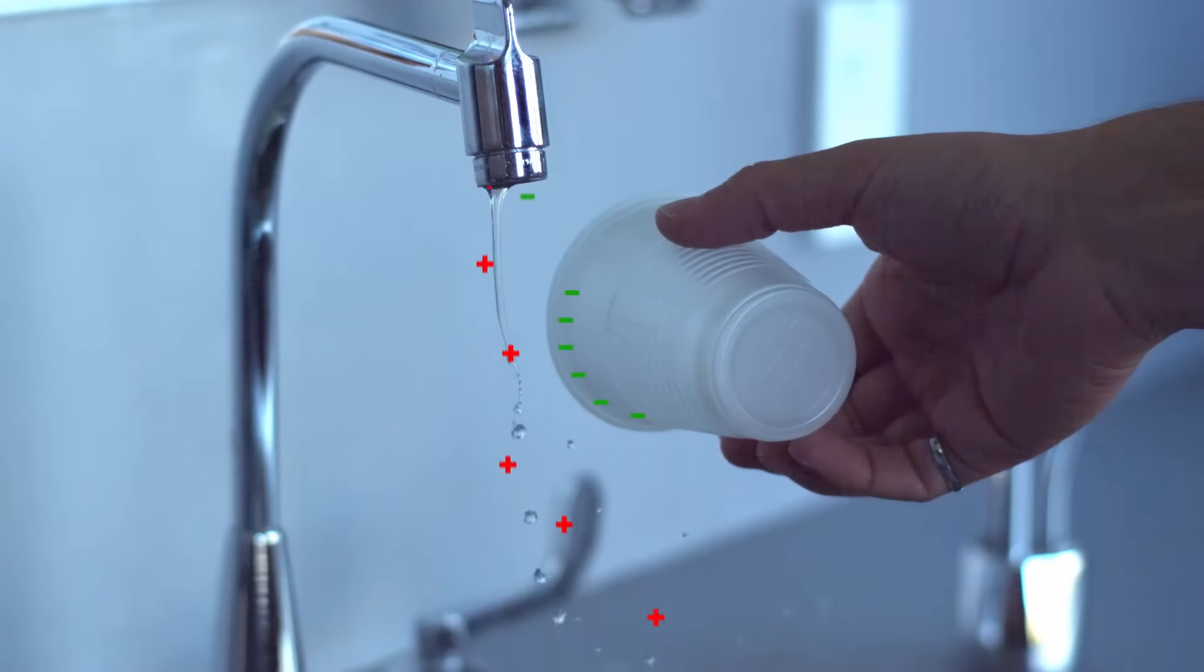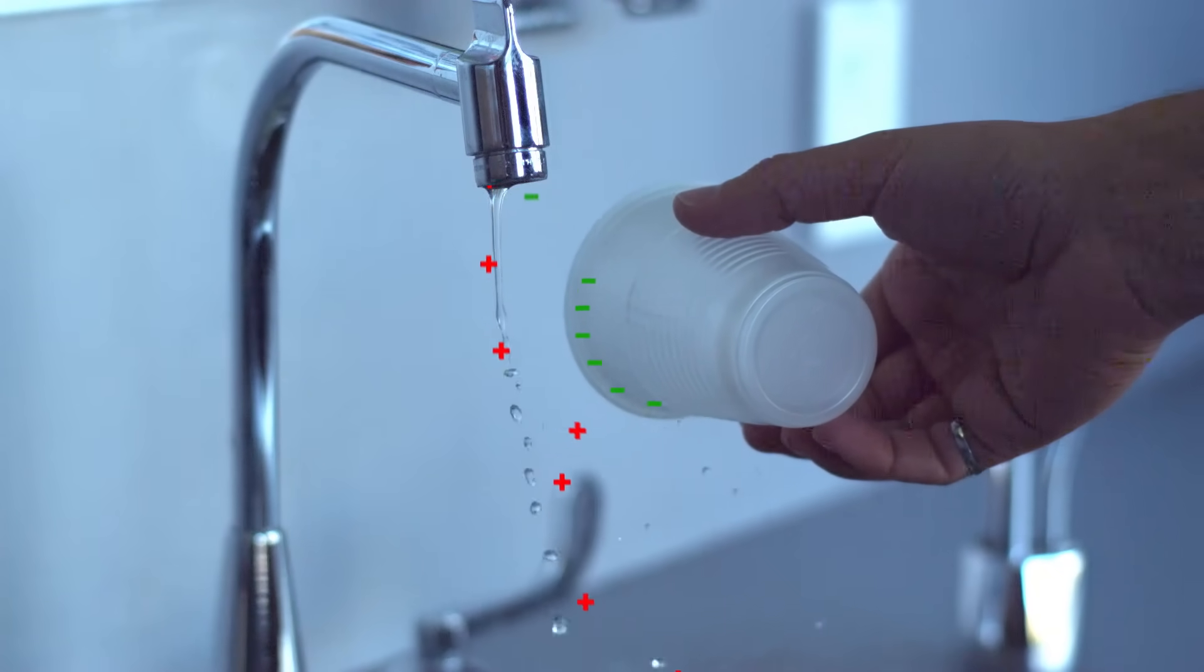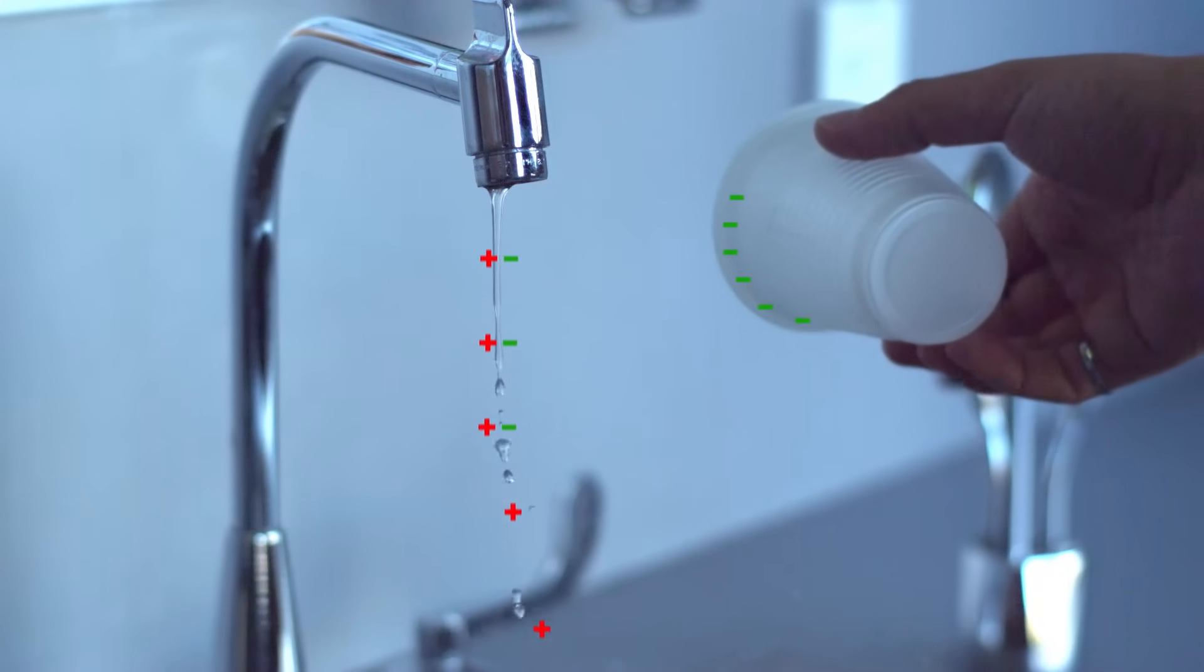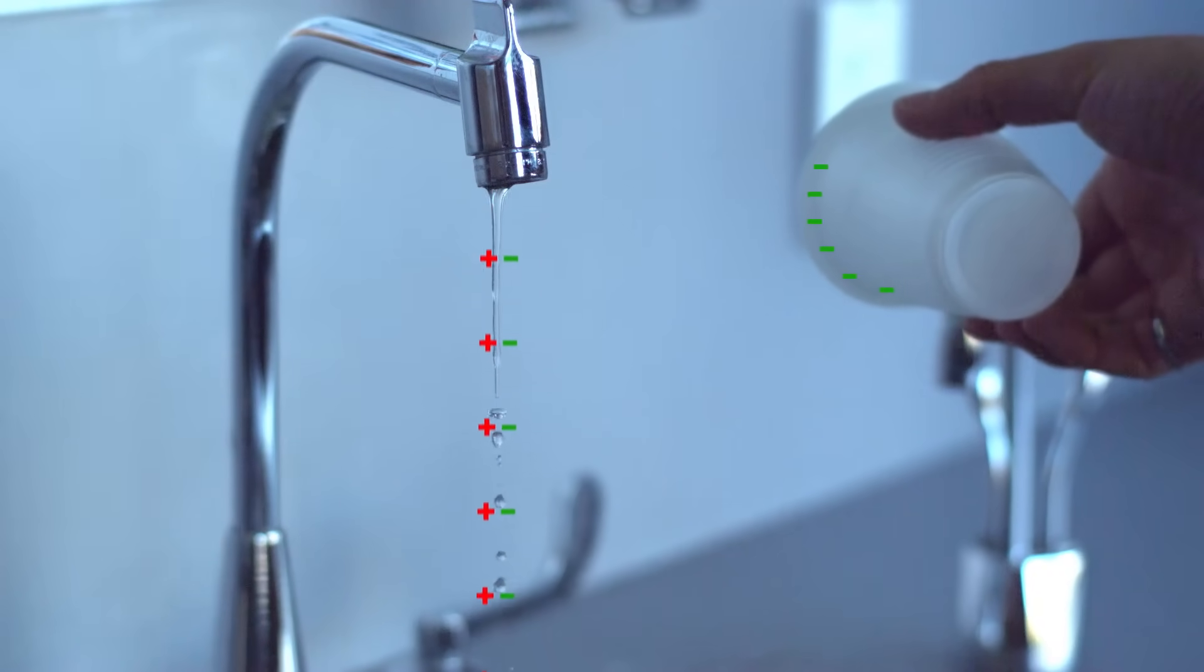So what happens when you hold this negatively charged cup up against the water stream is it will repel the negative charges, the negative ions in the water, some of which will go back up into the tap. And that means the water coming down will be slightly positively charged.